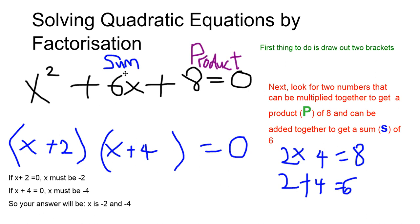Two numbers we can multiply to get 8 are 2 and 4. And these two numbers, when we add them, we will get 6. So, we're going to put 2 and 4 in the brackets. Once we've put whatever letter we have here, we put it in the two brackets we've just drawn.